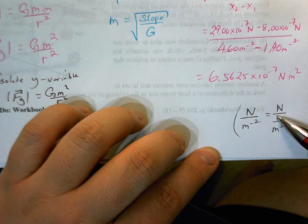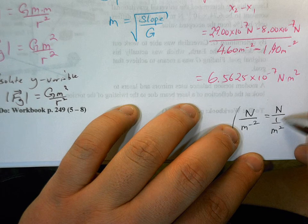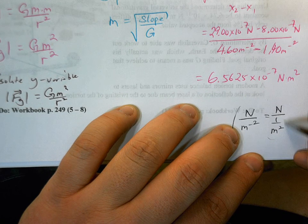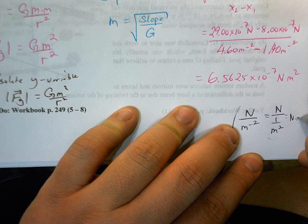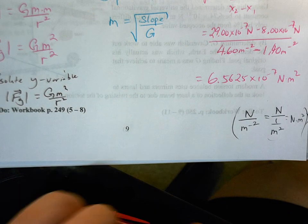So we know that newtons divided by meters to the minus 2 is really newtons divided by 1 over meters squared. And then newtons divided by 1 over meters squared, we can, this is the same as multiplying the newtons by the reciprocal of this. So then we'll get that newton meters squared. So that's how we're getting the units on this.